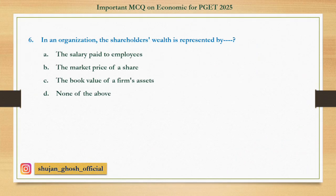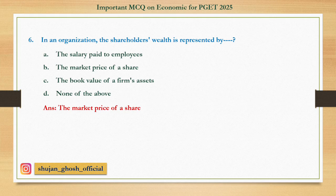Question number six: In an organization, the shareholders' wealth is represented by — option A: the salary paid to employees. B: the market price of a share. C: the book value of a firm's assets. D: none of the above. Answer: the market price of a share. The price a share holds in the market represents the shareholder's wealth. For example, if you hold shares of Punjab National Bank, the value of those shares in the market is your wealth.